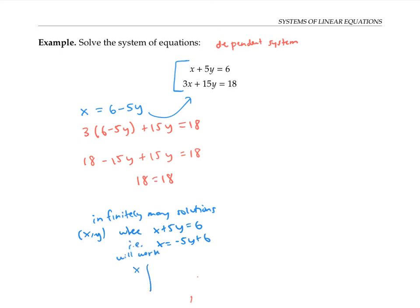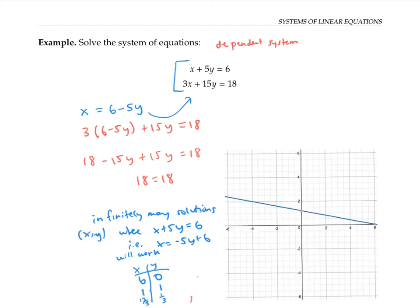Any x and y values that satisfy the first equation will satisfy the second, so this system has infinitely many solutions. Any ordered pair (x, y) where x plus 5y equals six — or x equals negative 5y plus six — will work. For example, y equals zero gives x equals six; y equals one gives x equals one; y equals one-third gives x equals thirteen-thirds. Graphically, both equations produce the same line, so the lines lie on top of each other.